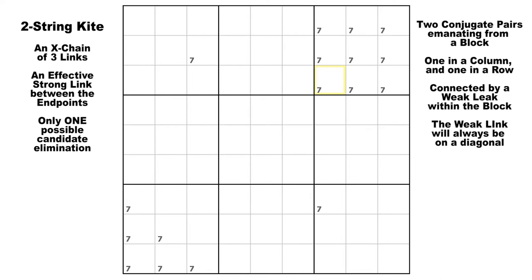Here we have an AIC or an X-chain of three links, starting here on this candidate seven in row two, column three. There is a strong link down to this seven in row nine, column three, and then a weak link across the block over to this seven, and then a strong link over to this seven in row seven, column seven.